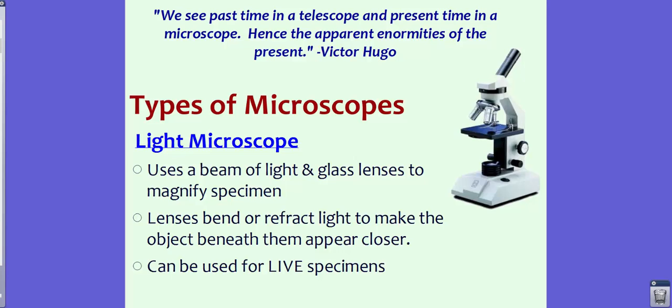In order to see cells, we do need to use some type of microscope, and there's a couple that we're going to talk about today. The first is a light microscope. This is the typical one that we're going to be using in the classroom or ones that perhaps you've already used before. Light microscopes use beams of light and glass lenses to magnify specimens. The lenses will bend or refract the light to make the object beneath them appear closer. Light microscopes can be used for live specimens. For instance, sometimes in class we might be able to view paramecium, perhaps euglena, perhaps other things that you can actually see moving around. There are other scopes that use kind of like dissection scopes where perhaps you can see something that are a little bit larger and use a microscope to look at them. And those also can be living organisms.